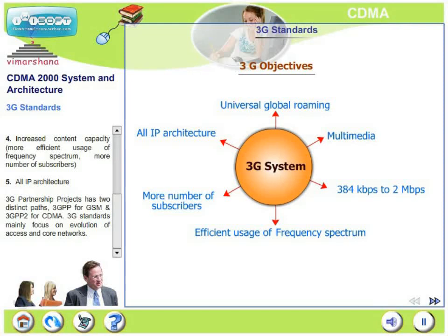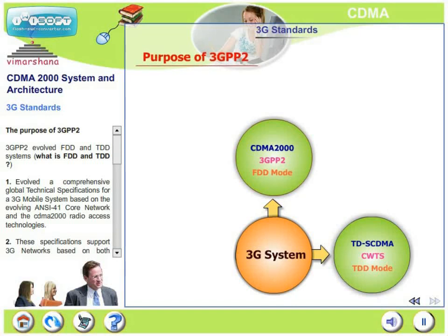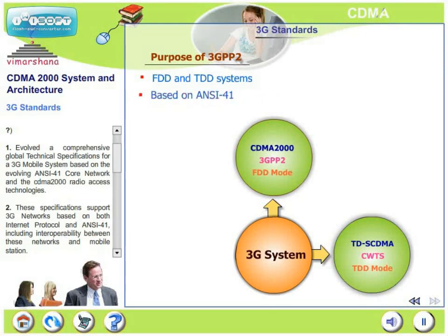3G standards mainly focus on evolution of access networks and core networks. 3GPP-2 deals with CDMA, and evolved frequency division duplex and time division duplex systems. The purpose of 3GPP-2 was to develop comprehensive global technical specifications for a 3G mobile system based on the evolving ANSI-41 core network and CDMA 2000 radio access technologies.